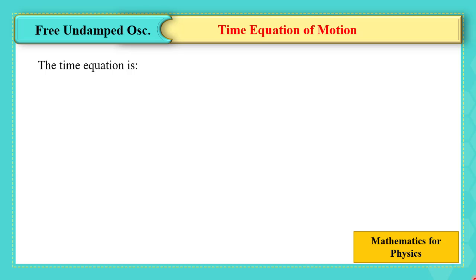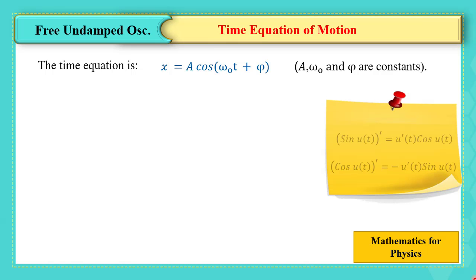This time equation is completely new, and we are going to explain it. But first, how do we verify that this equation is a solution to the differential equation? We should replace it in the differential equation and check that the equality is verified. We are going to consider x equals a cosine (omega 0 t plus phi), using the derivative rules: the derivative of sine u is u prime times cosine u, and the derivative of cosine u is minus u prime times sine u. Let's find x double prime and replace it in the equation.